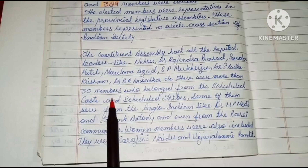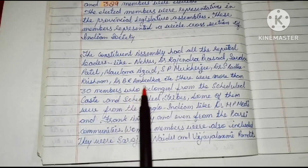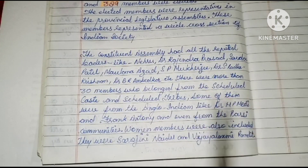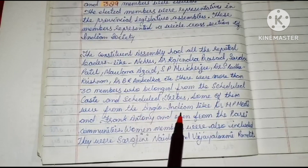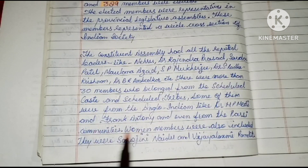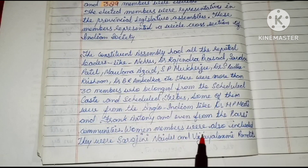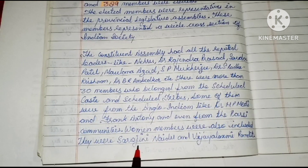There were more than 30 members from the scheduled castes and scheduled tribes as well. And some of them were from the Anglo-Indian community, like Dr. H.P. Modi and Frank Antony. And even from the Parsi communities — bharat mein jitne bhi the, har community se log leaders liye gaye the. Aur yahi nahi, women members were also included, jaise Sarojini Naidu and Vijay Lakshmi Pandit.